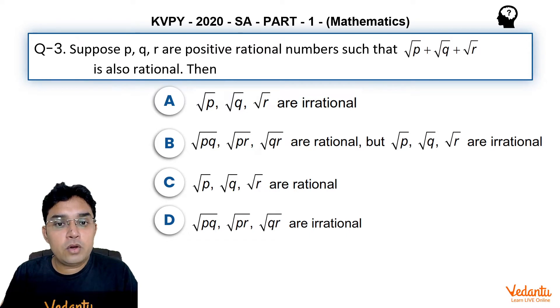Option A: √p, √q, √r are irrational. Option B: √pq, √pr, √qr are rational, but √p, √q, √r are irrational.